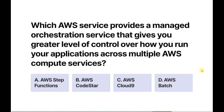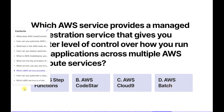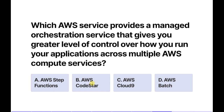In this question they are asking: which AWS service provides a managed orchestration service that gives you a greater level of control over how you run your applications across multiple AWS compute services? The options are: AWS Step Functions, AWS CodeStar, AWS Cloud9, and AWS Batch. AWS Step Functions provides a managed orchestration service that gives us a greater level of control — it allows us to coordinate and visualize the components of our application as a series of steps in a workflow.